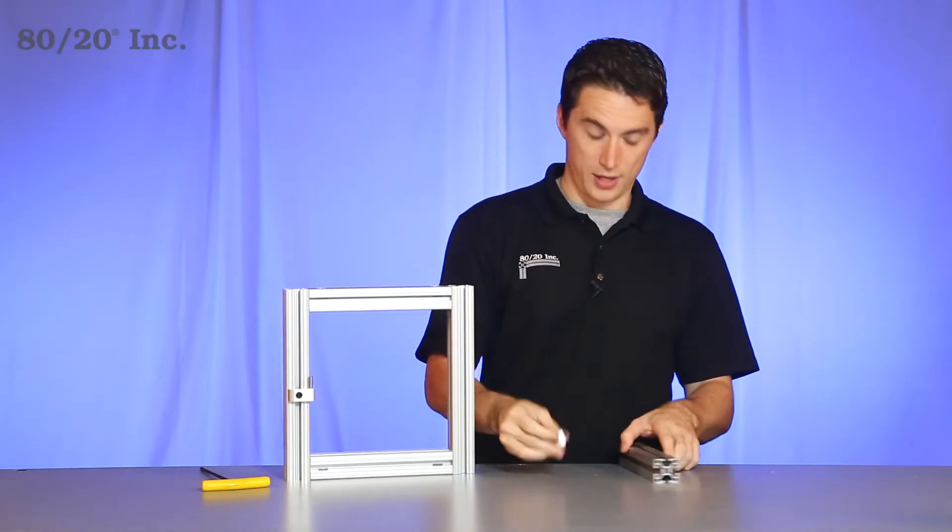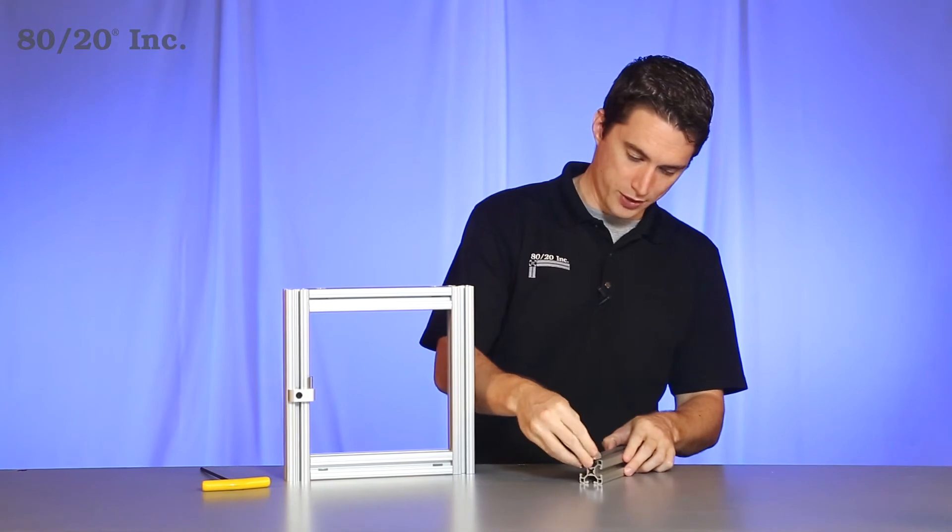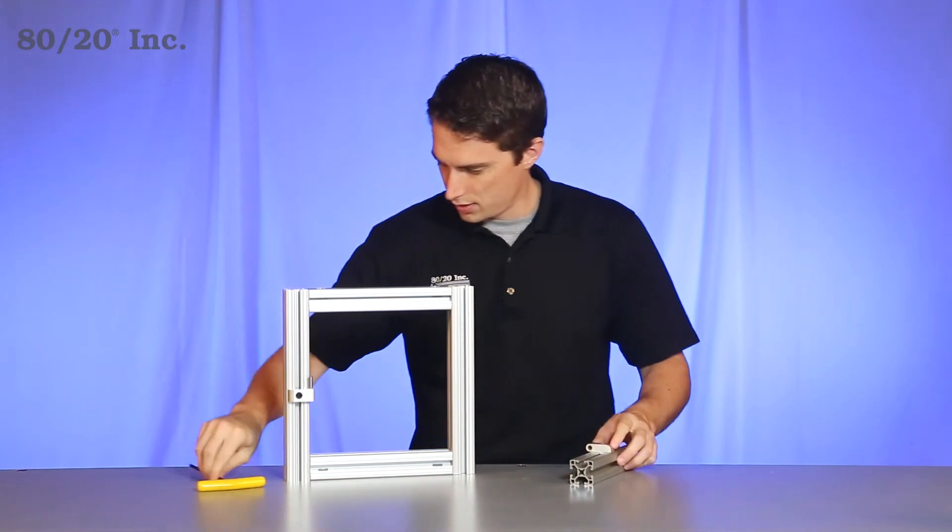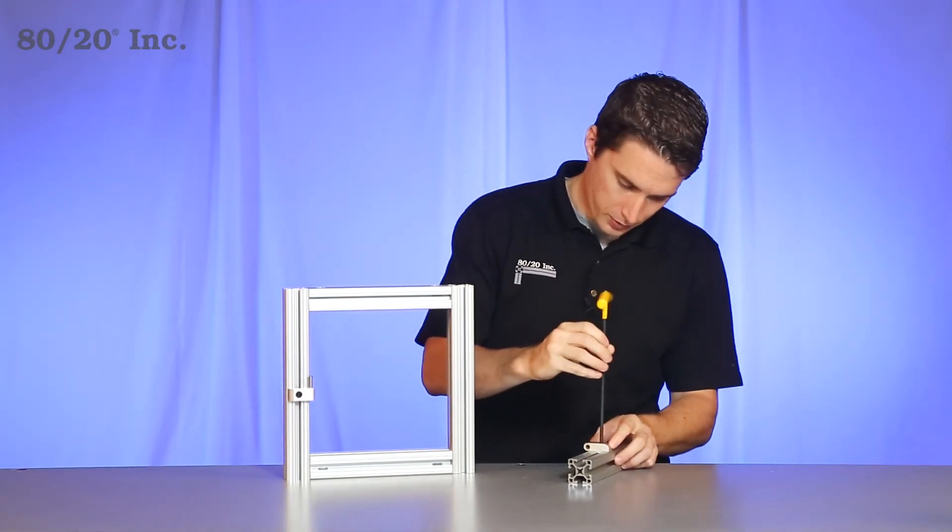We'll grab the other half of the hinge and slide it right into the open T-slot of this other profile. Get that on there. We'll tighten that down.